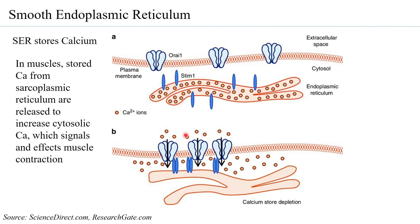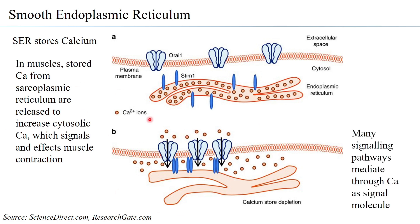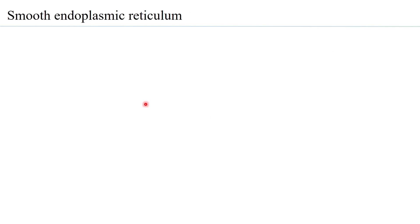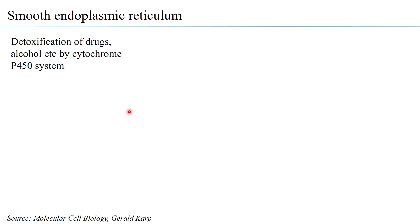In muscle cells, the endoplasmic reticulum is called the sarcoplasmic reticulum. The release of calcium from it leads to muscle contraction, and calcium must be taken back in for the muscles to relax again. Effectively, in many cell types, calcium acts as a signal molecule and is therefore stored inside the smooth endoplasmic reticulum.